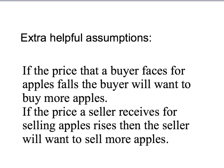I'm going to make a couple of extra helpful assumptions. These assumptions aren't necessary for our model to work, but they will make life a lot easier, so we're going to be using them right through this course. The first is that if the price a buyer faces for apples falls, then the buyer will want to buy more apples — if the price goes down, you buy more; if the price goes up, you buy less. Similarly, if the price a seller receives for selling apples rises, then the seller will want to sell more apples. If the price goes down, they don't want to sell as many.